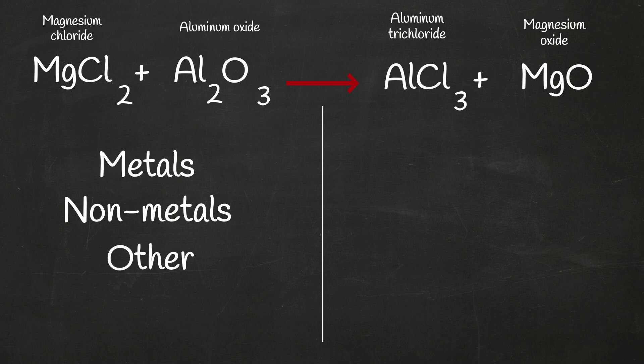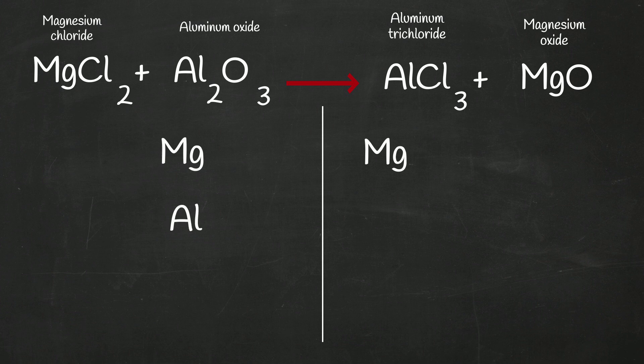I will list them magnesium, aluminum, which are metals, chlorine, non-metal, and then oxygen.